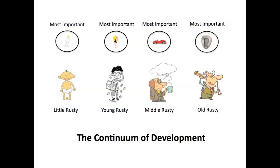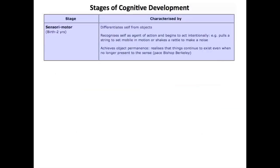Each schemata changed, deriving logically from the one before it. Here we see little Rusty and young Rusty and middle Rusty and old Rusty, and there are all sorts of changes going on. Piaget observed his children, which first caused him to formulate his theories, and he began to put forth stages of cognitive development.